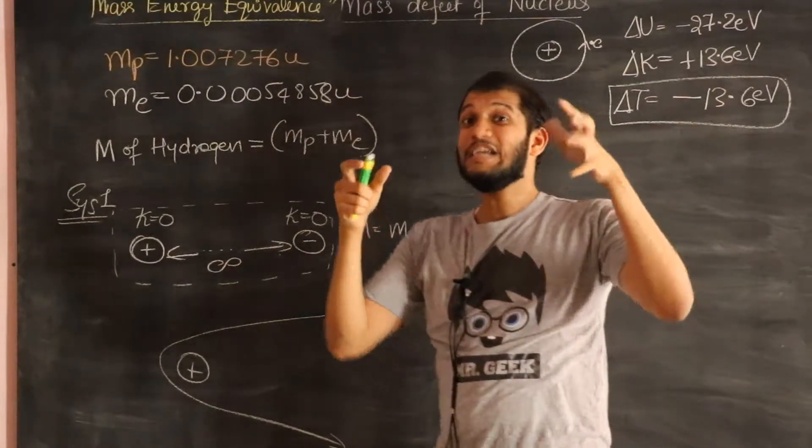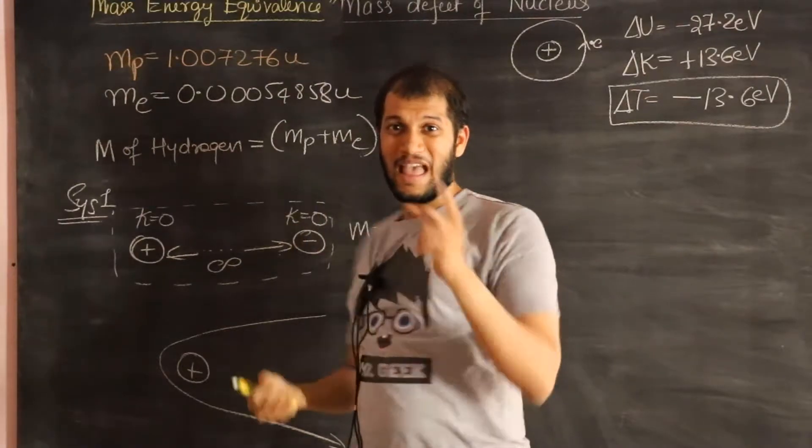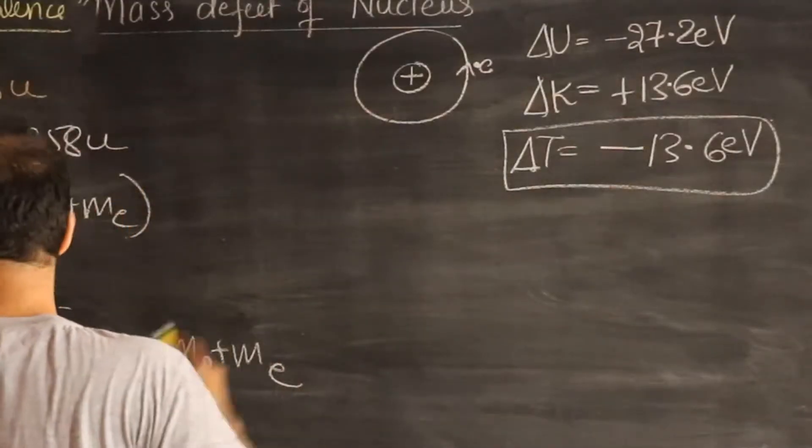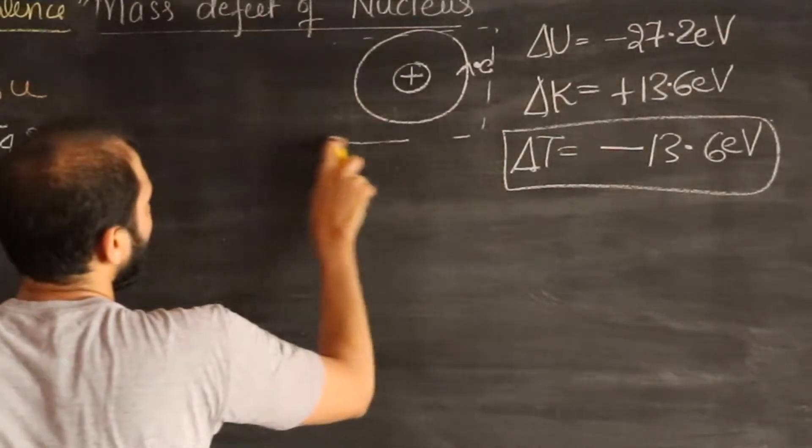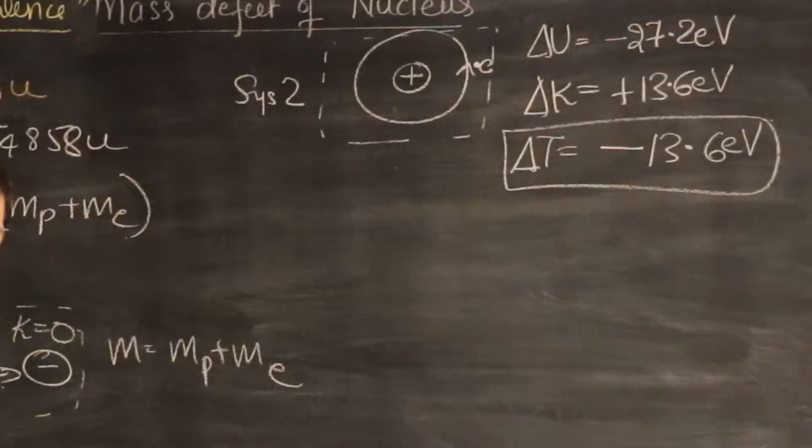It has to be smaller. Because you have removed some energy. And therefore, therefore, if you take this as our second system, this is the system 2, system 2 is our hydrogen atom,